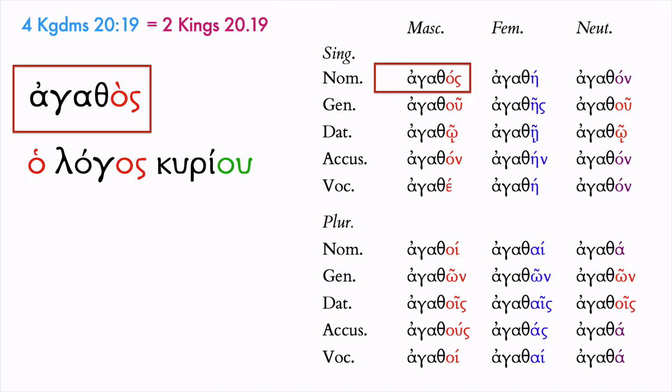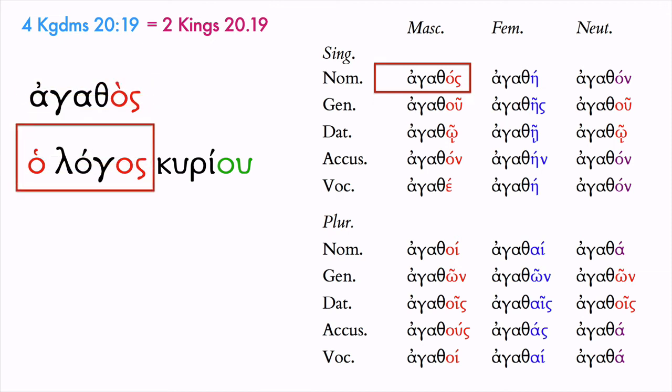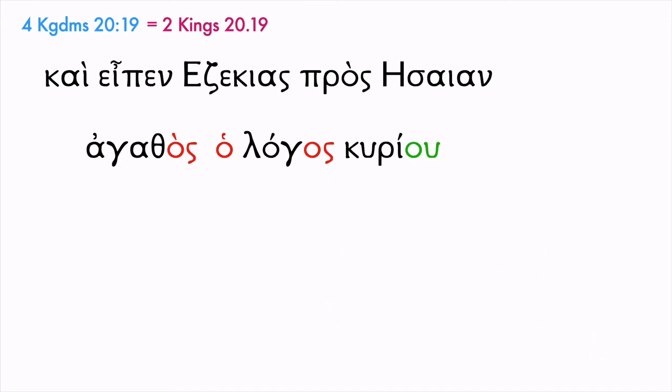Something is being described as good, and now we need to search our sentence for a nominative masculine singular noun. Our search is not terribly difficult, because there's only one noun and it is masculine singular — and it looks a lot alike. That will often be the case, but not always. So 'logos,' the word, agrees with 'agathos.'